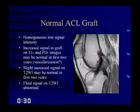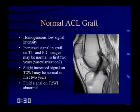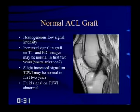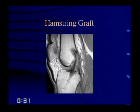A little increased signal intensity in the graft on T1 and proton density images can be normal in the first couple years, thought to be due to vascularization. A very slight increase on T2 can also be normal in the first couple years, but fluid signal intensity on T2 is considered abnormal. Hamstring grafts often have a spiral appearance due to folding — that's completely normal for this graft type.